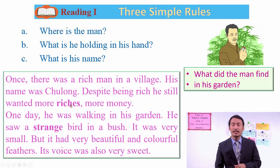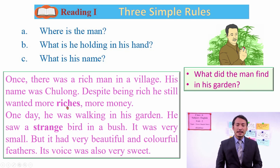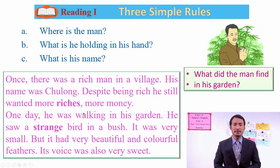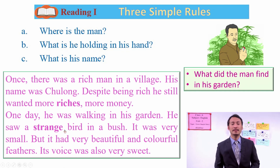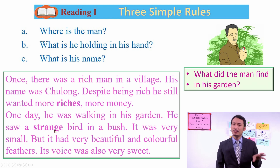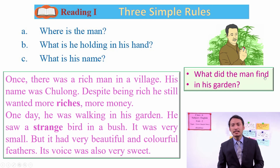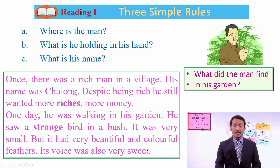We have seen some new words discussed in the previous slide. 'Riches' — he still wanted more riches — means he wanted more money or wealth. And he saw a 'strange' bird — strange here means the bird which was not seen by the man before. What did the man find in his garden? He found a beautiful and colorful bird in his garden.